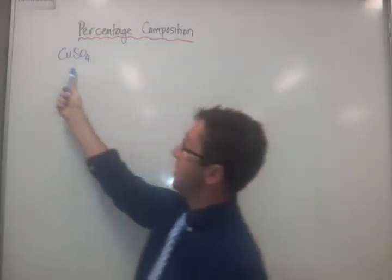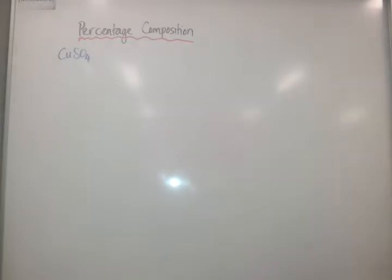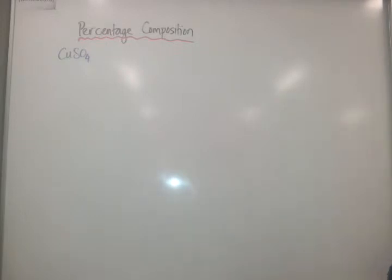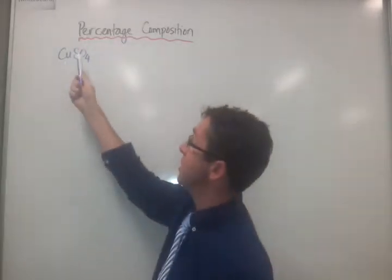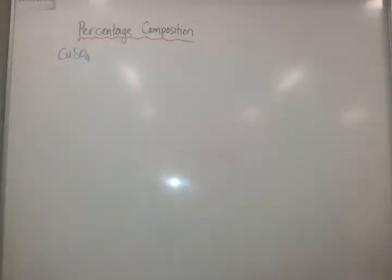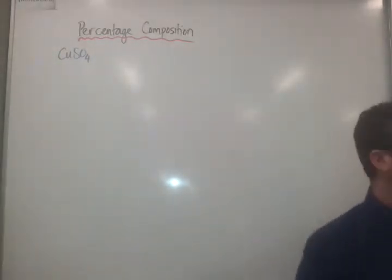Same idea with working out the percentage composition of a compound. Where we're heading with this is we don't normally calculate percentage composition. We can use analytical techniques to find the percentage composition. So what percentage is copper, what percentage is sulfur, and what percentage is oxygen, for example. And from that, we calculate what its formula is most likely to be. We'll get into that later.